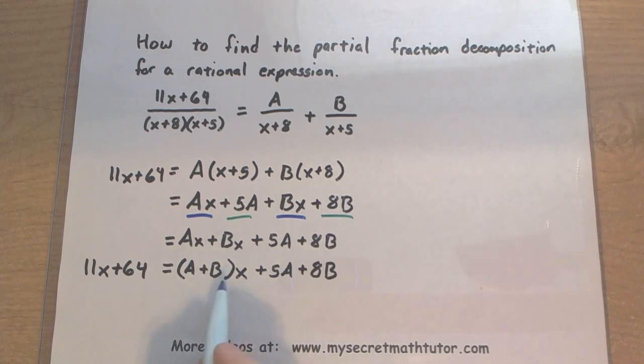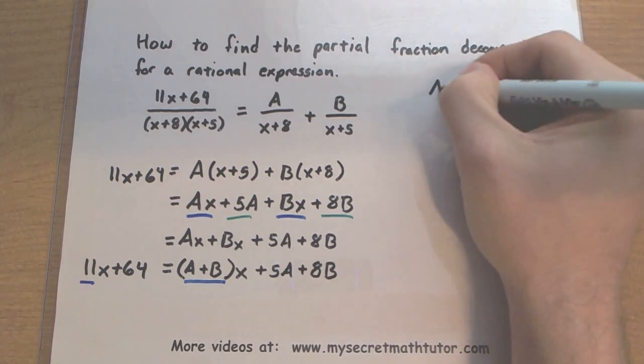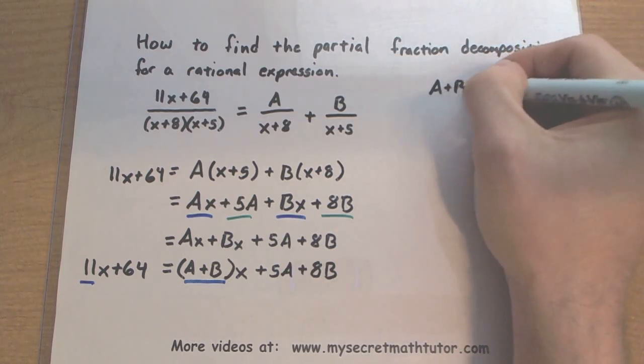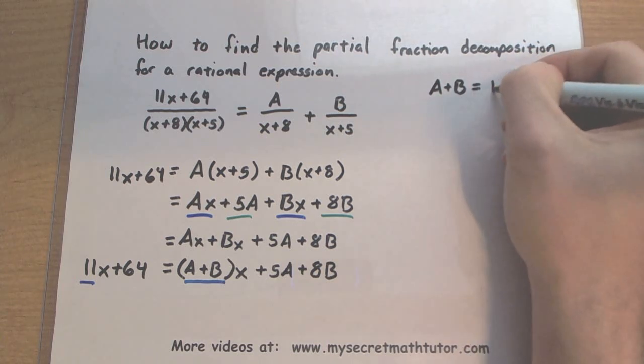Let's first look at the x's. On the right side, I know that A plus B times x must equal this 11x over here. So that tells me something very specific about A and B. If you take A and you add it to B, then it better equal 11.